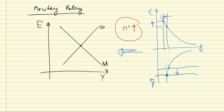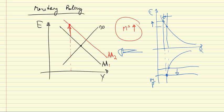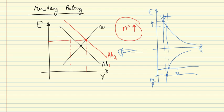How does that translate to the DD-AA diagram? It is equivalent to an upward shift of the AA curve — from AA1 to AA2 — which means that for any given level of output, a more expansionary monetary policy implies a more depreciated exchange rate. This upward shift with an unchanged DD curve means we get to a new equilibrium at a more depreciated exchange rate and a higher level of output. So expansionary monetary policy leads to a fall in the interest rate, a rise in the exchange rate equivalent to a depreciation, higher net exports, and increased output.